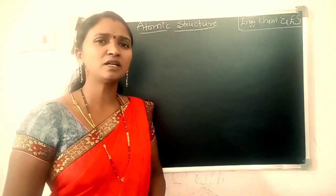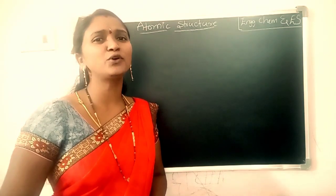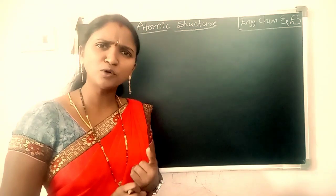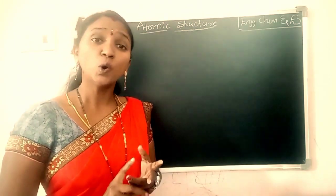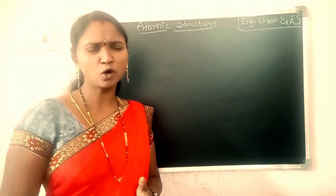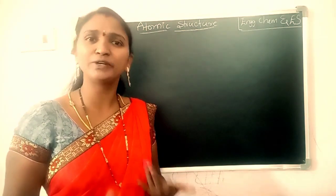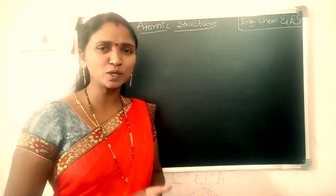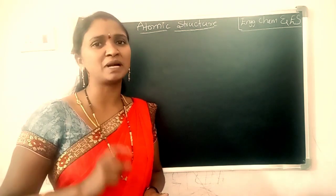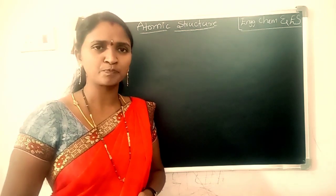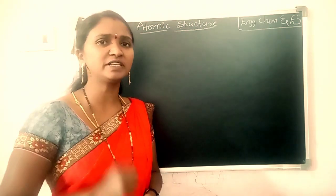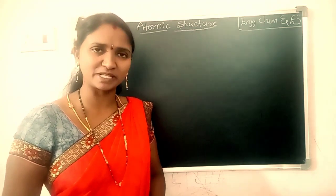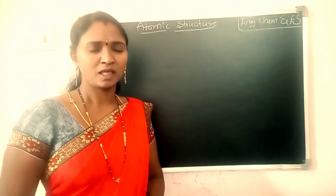So there are three important principles: the Aufbau principle, Hund's rule — also called Hund's rule of maximum multiplicity — and the third one is Pauli's exclusion principle.